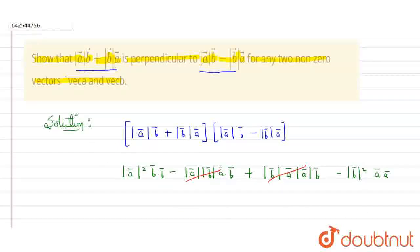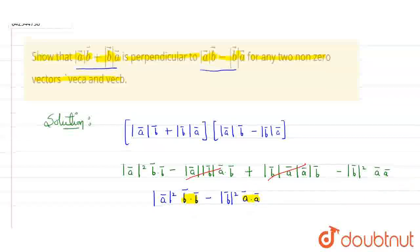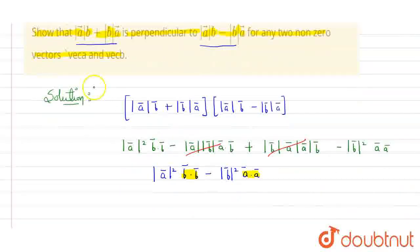Now, what are we left with? Here, this is vector A square and here, B dot B vector and negative of vector B square A dot A vector. Now, this B dot B vector will be B square and A dot A vector will be A square. Let me write it here.